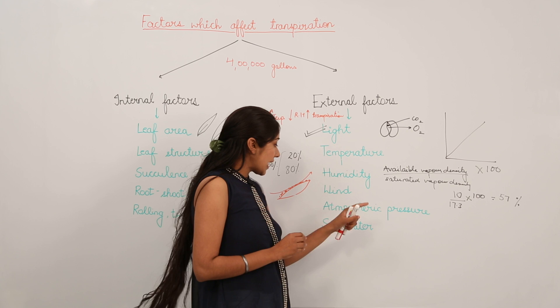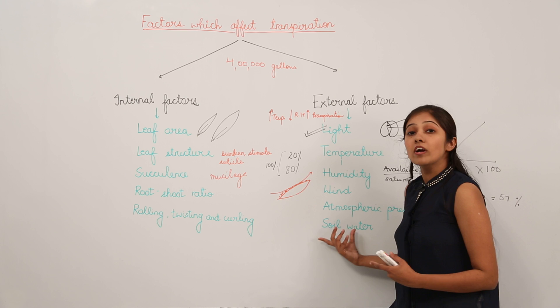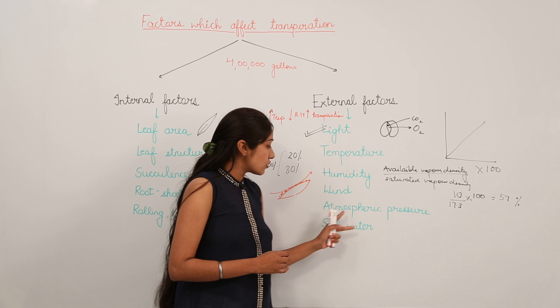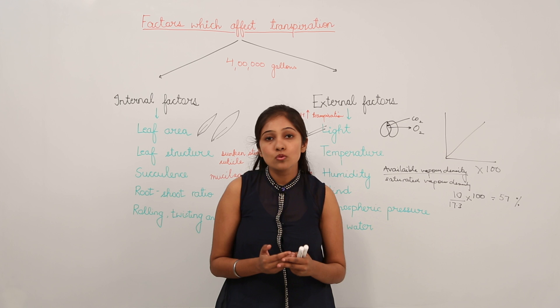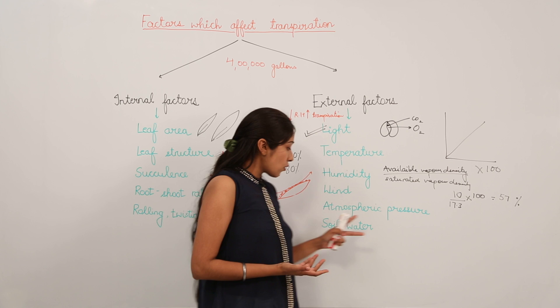Next we move on to soil water. Plants absorb water from the soil, so the presence of soil water is an important factor determining the rate of transpiration. If soil water is sufficiently available, transpiration rate can be maintained. If soil water is insufficient, the rate of transpiration will be affected. So soil water availability plays an important role in determining transpiration rate.